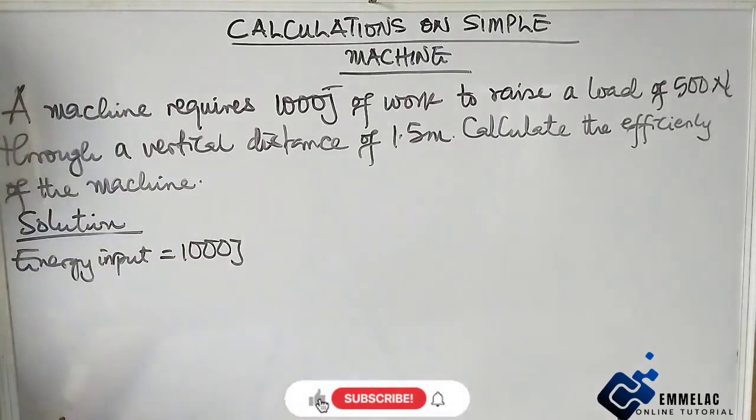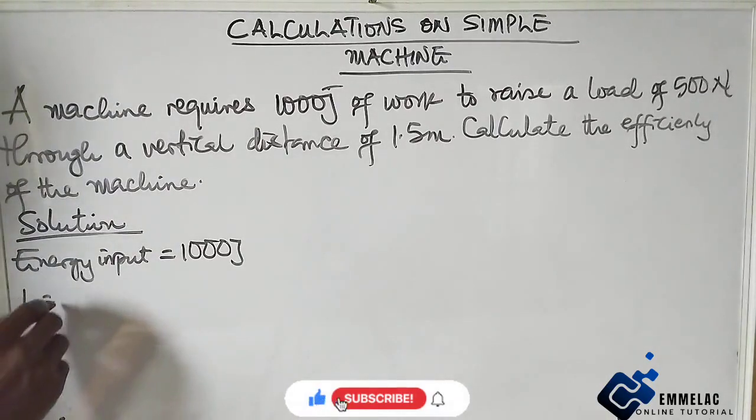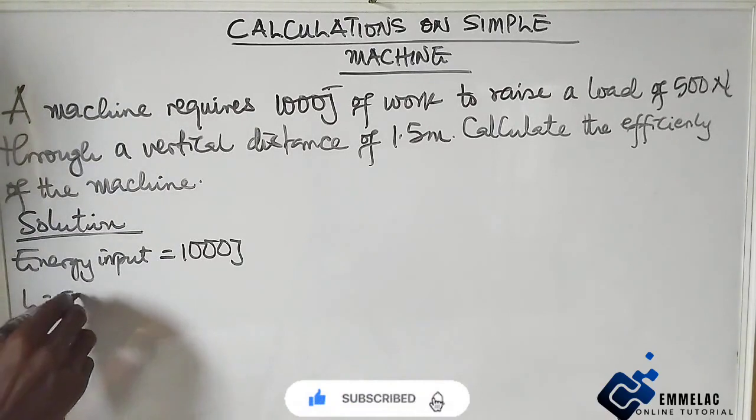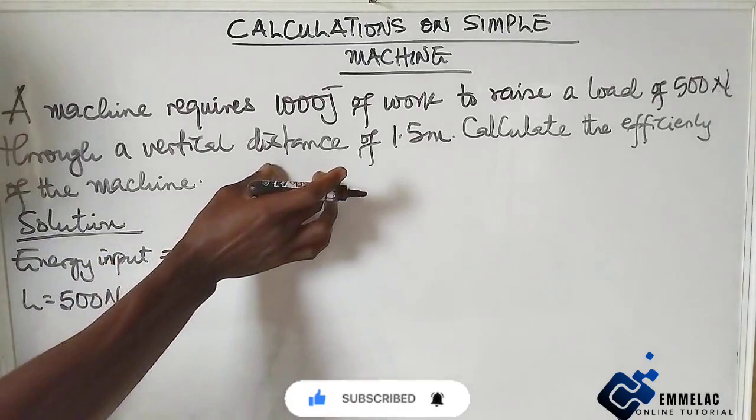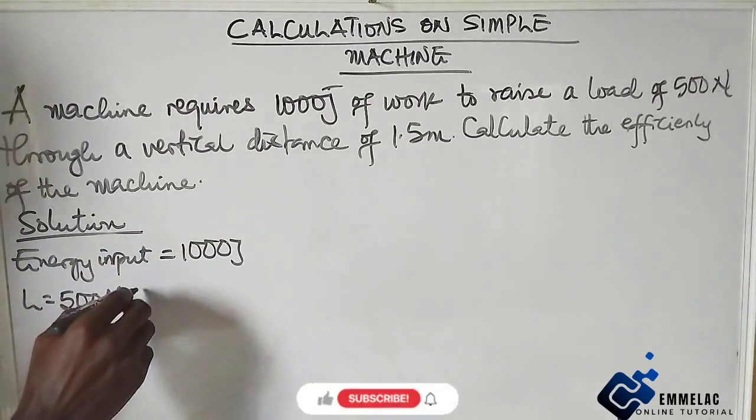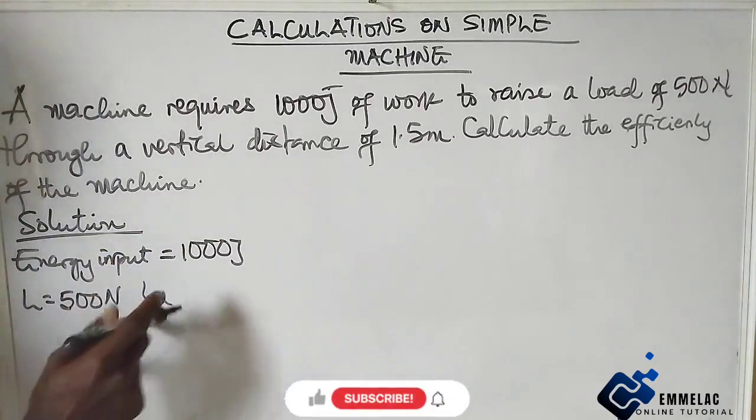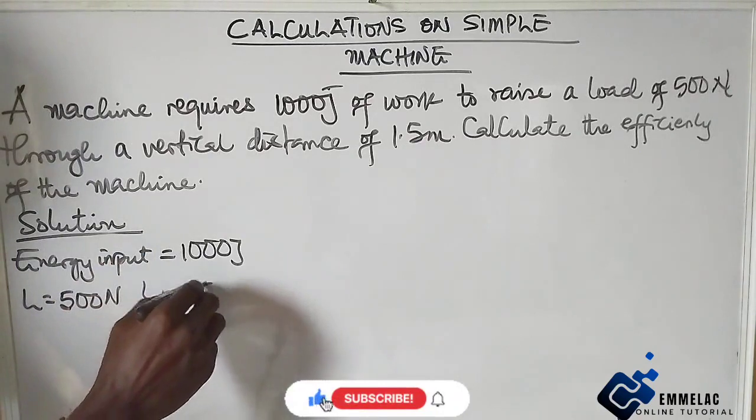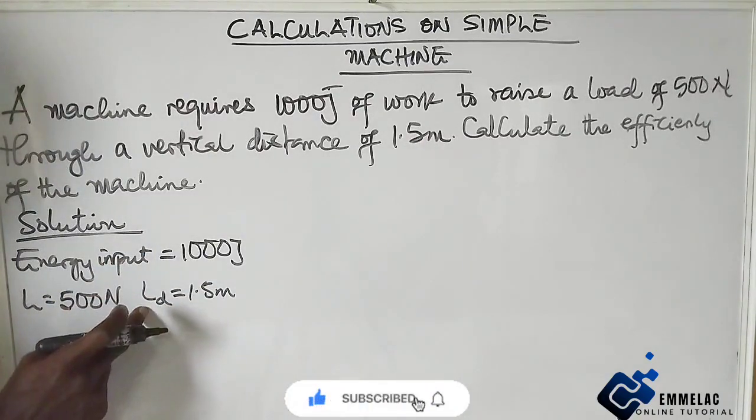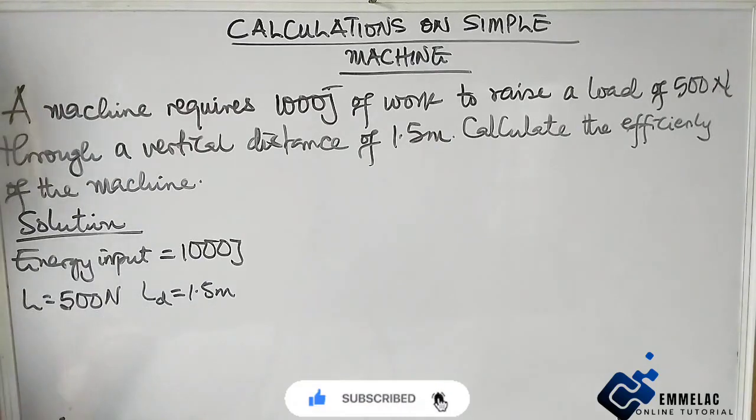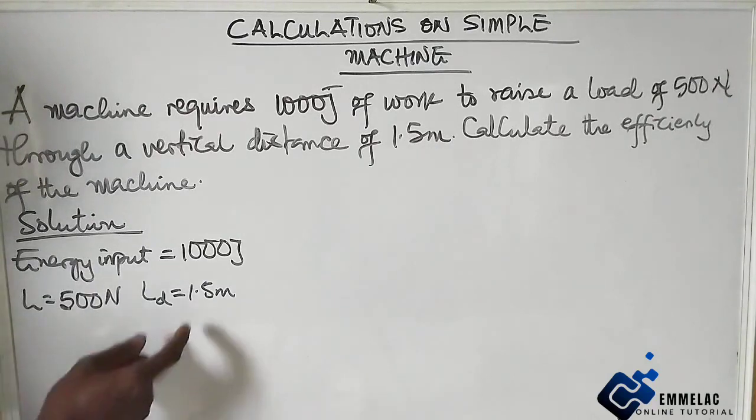Now we have that the load that this input needs to raise is 500 newton, and the distance is 1.5 meter - the distance moved by the load. Now we have to find the efficiency.